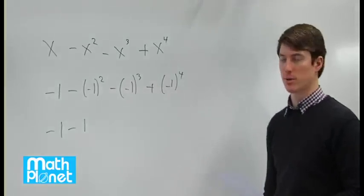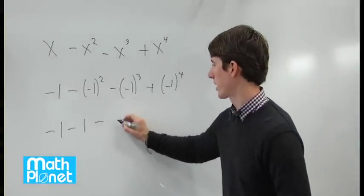Negative one to an odd number, an odd power, is a negative number, so we have minus negative one.